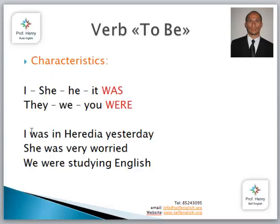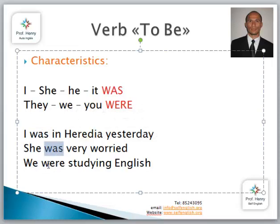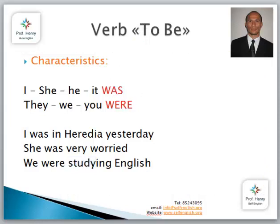Let's look at some examples. I was in Heredia yesterday — yo estaba, yo estuve. She was in Heredia yesterday, or Julio was in Heredia yesterday. She was very worried. We were studying English. ¿Qué es la diferencia? Aquí, aparte de que tenemos el verbo were — una forma pasada del verbo to be — tenemos otro verbo: study con ing. Esto se llama una forma progresiva. Existen formas progresivas en presente, en pasado y en futuro. In past, only was and were.